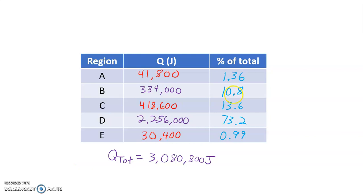What we get is that heating the ice accounted for just about 1% of the total, 1.36%. Taking the ice and turning it into liquid water took up 10.8% of the total amount of energy. Heating the water from 0 degrees Celsius to 100 degrees Celsius took up 13.6% of the total amount of energy. The phase change from liquid to gas, however, took up almost three-fourths of the total amount of energy. That's astounding, 73.2%. And then the last part only about 1%, 0.99%.